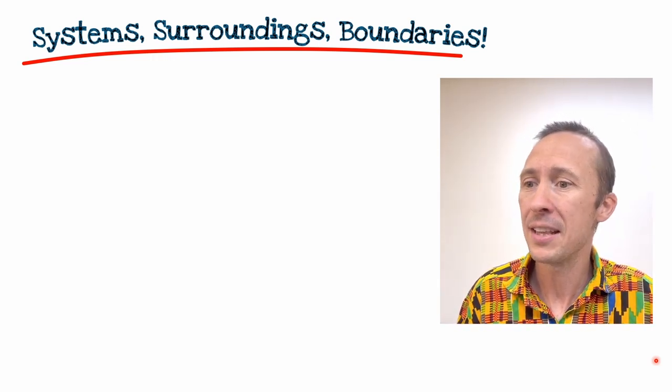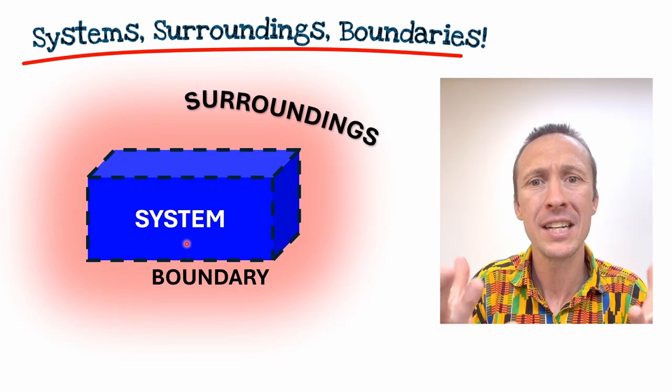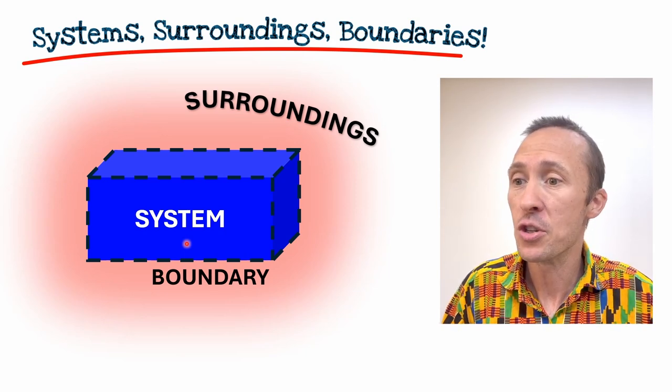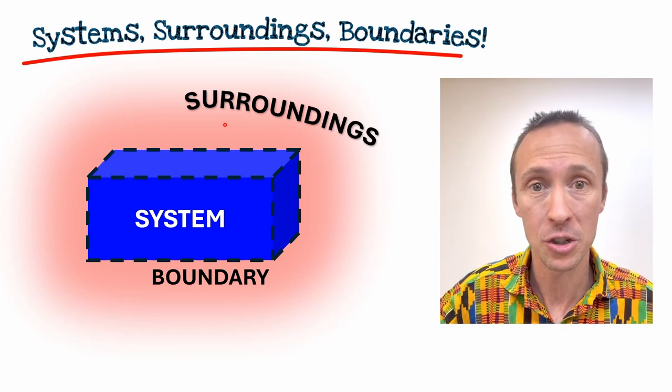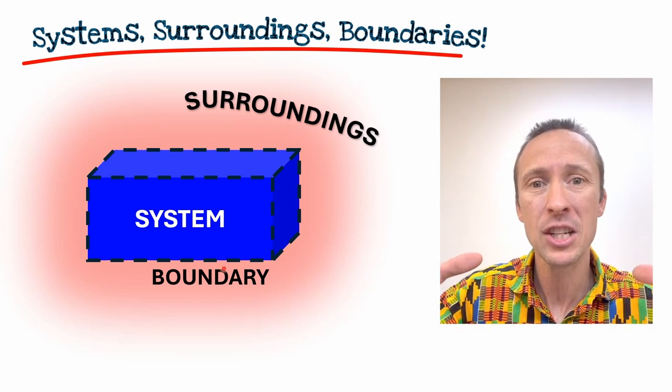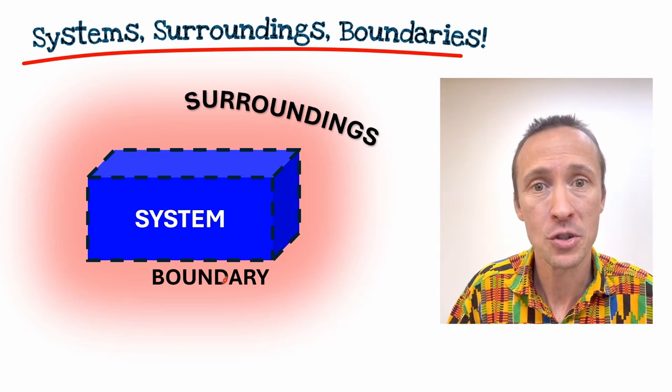So quite simply, the system is any three-dimensional region in space in which we wish to focus our attention. And the surroundings is literally the rest of the physical universe. And the boundary is some three-dimensional surface that separates the system from the surroundings.